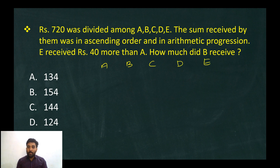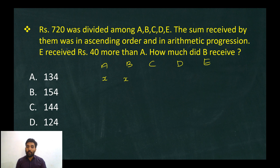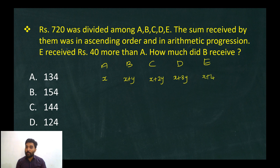The amounts are in arithmetic progression. Let a equals x, b equals x plus y, c equals x plus 2y, d equals x plus 3y, e equals x plus 4y.